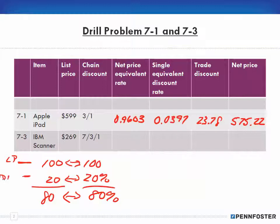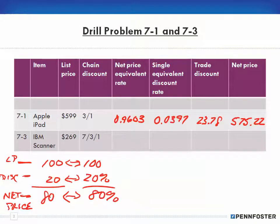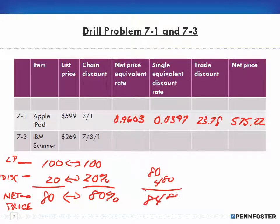We have our list price, then our discount amount, and we end up with our net price — just like when you go in a store and buy a sweater. You buy a $100 sweater at 20% off: you're charged $80 plus tax. At 6% tax that's $4.80, so you pay $84.80 for that sweater. This is no different.